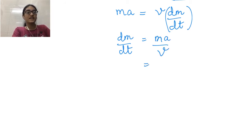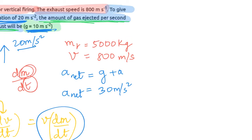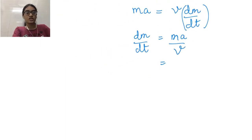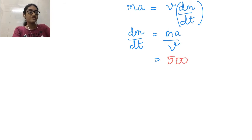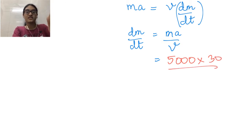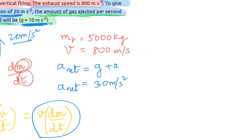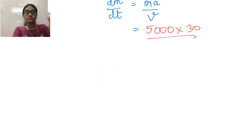Mass is 5000 kg, velocity is 800 meter per second, and net acceleration is 30 meter per second square. Substituting these values: dM/dt equals 5000 into 30 upon 800.